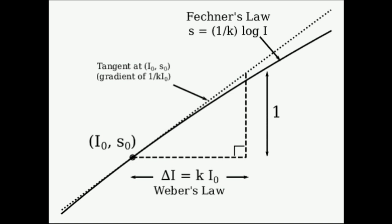the JND, dS, is proportional to the initial stimuli intensity S. Mathematically, it can be described as follows: where S is the reference stimulus and K is a constant.